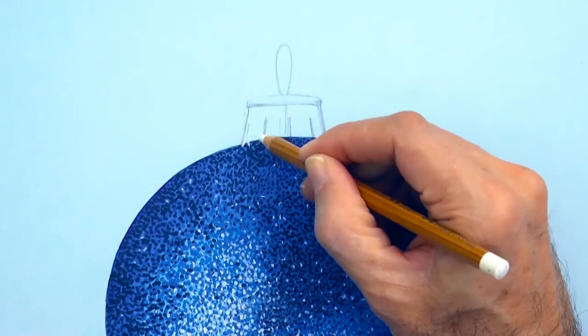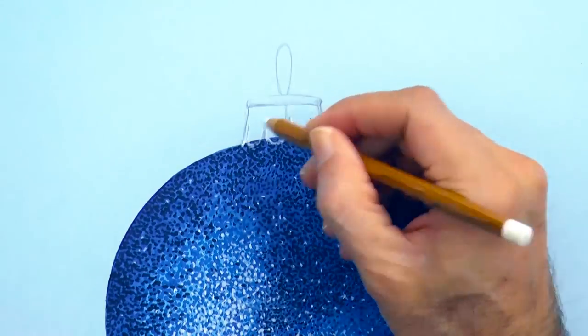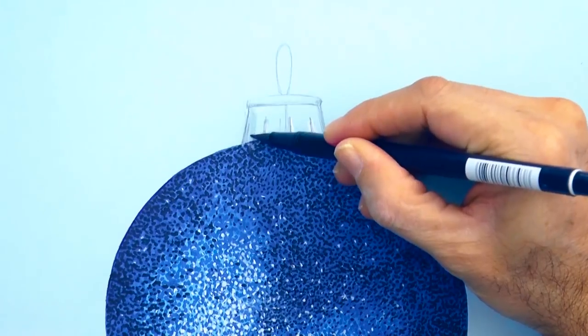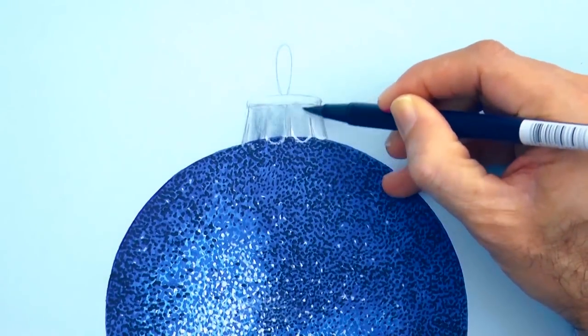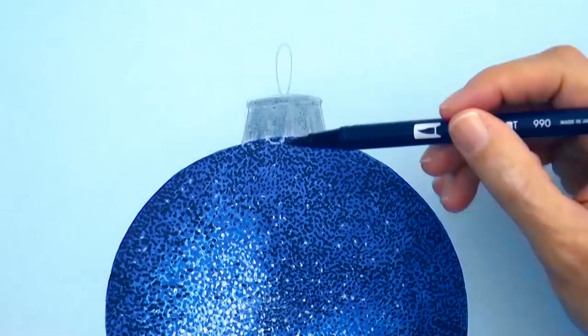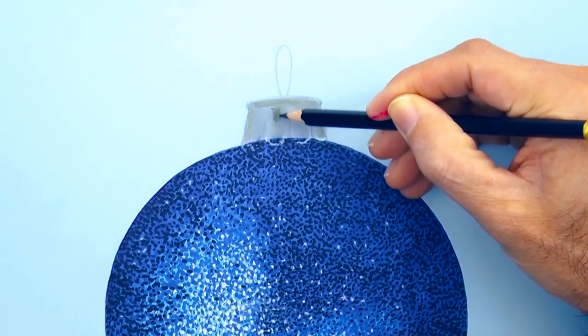The lower part will be reflecting and so we can do it white. For the rest I use a light gray marker. This is going to be like the base color and as it is a metallic part, it will also need reflections. We can do the dark ones with a black pencil.